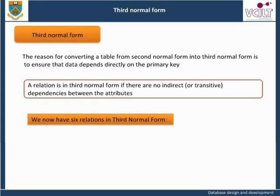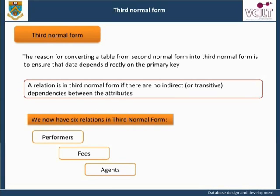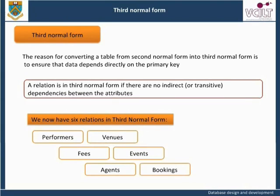The conversion of a relation into third normal form will resolve anomalies identified in second normal form. We now have six relations in third normal form: Performers, Fees, Agents, Venues, Events, and Bookings.